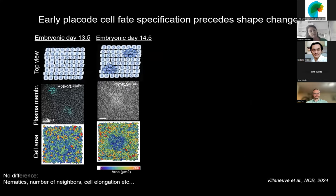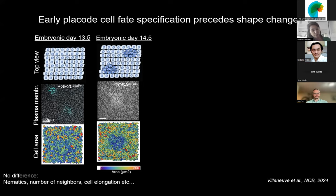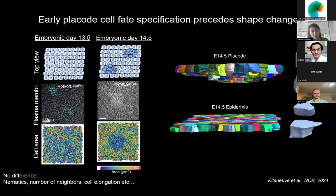What we did first was look at potential morphological differences at early steps of placode development. We used the FGF20 beta-galactosidase mouse model, as FGF20 is one of the earliest markers for placode development. We looked at morphological parameters such as cell area, number of neighbors, and nematic order. However, we couldn't distinguish any differences between FGF20-positive early placode cells and surrounding interfollicular epidermal cells. In contrast, one day later at E14.5, we observed a strong reduction of cell area. When we looked at volume, it was preserved between placode and surrounding epidermal cells, but there was a strong elongation of placode cells together with reduction of apical and basal surfaces, indicating that early placode cell phase specification precedes this volume-preserving elongation.